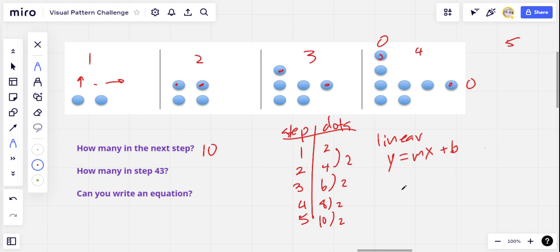So we'd have y equals 2x. And the b is whatever we need to adjust it. In this case, I don't think we need to adjust it at all. Because look, if we say y equals two times and we put in the step number for x.